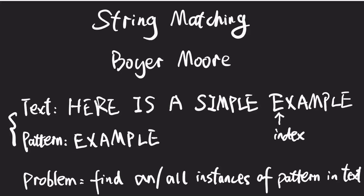Boyer-Moore algorithm is a very useful string matching algorithm. The input are two strings: one is a text string, the other is a pattern string. The problem is to find one or all instances of the pattern string in the text string.